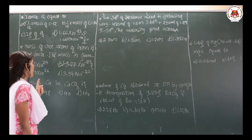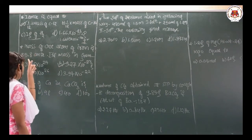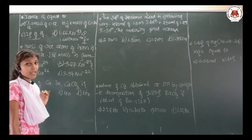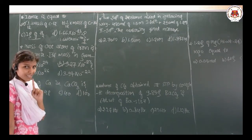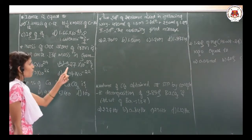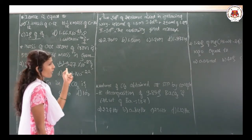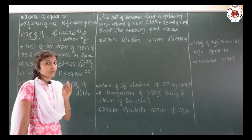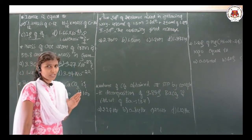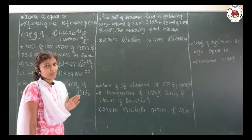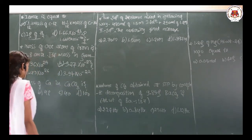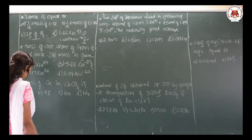So we need to convert 55.8 amu — multiply by the value of 1 amu and you are going to get 9.27 × 10⁻²³ gram. Let us go to one more question.